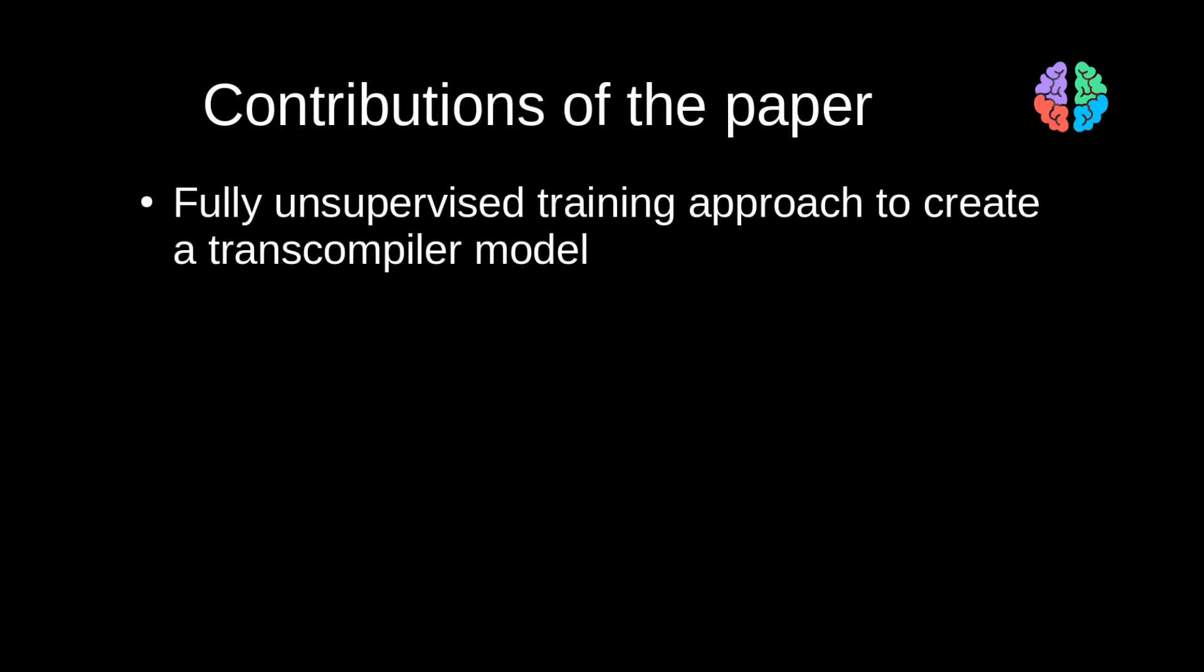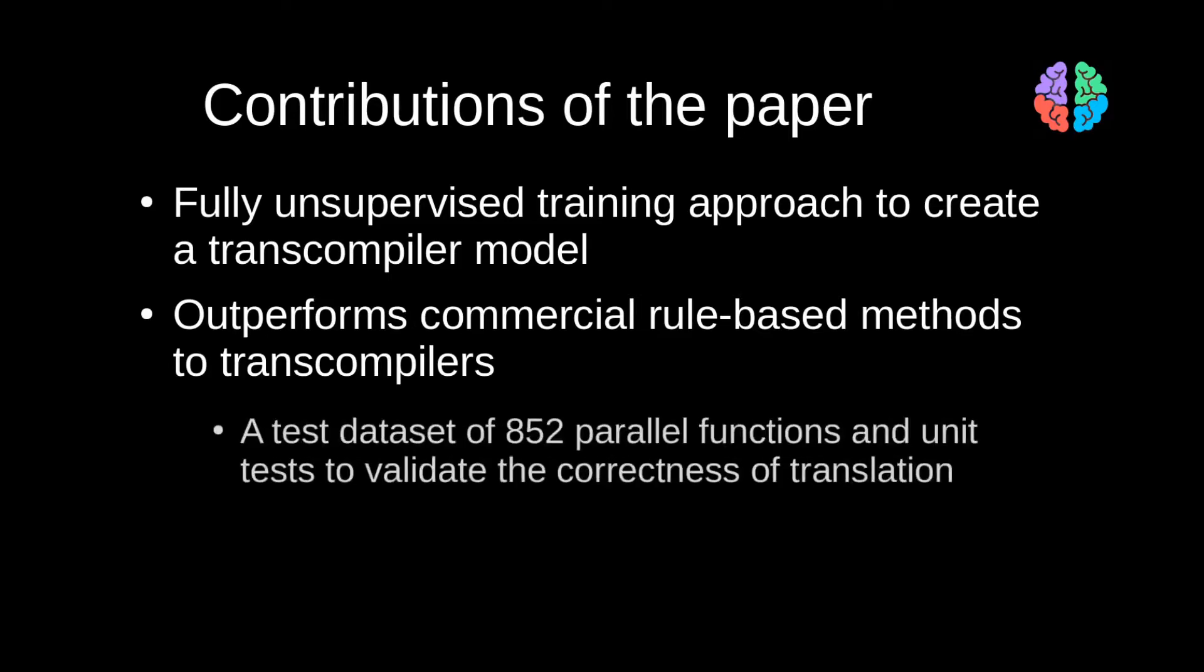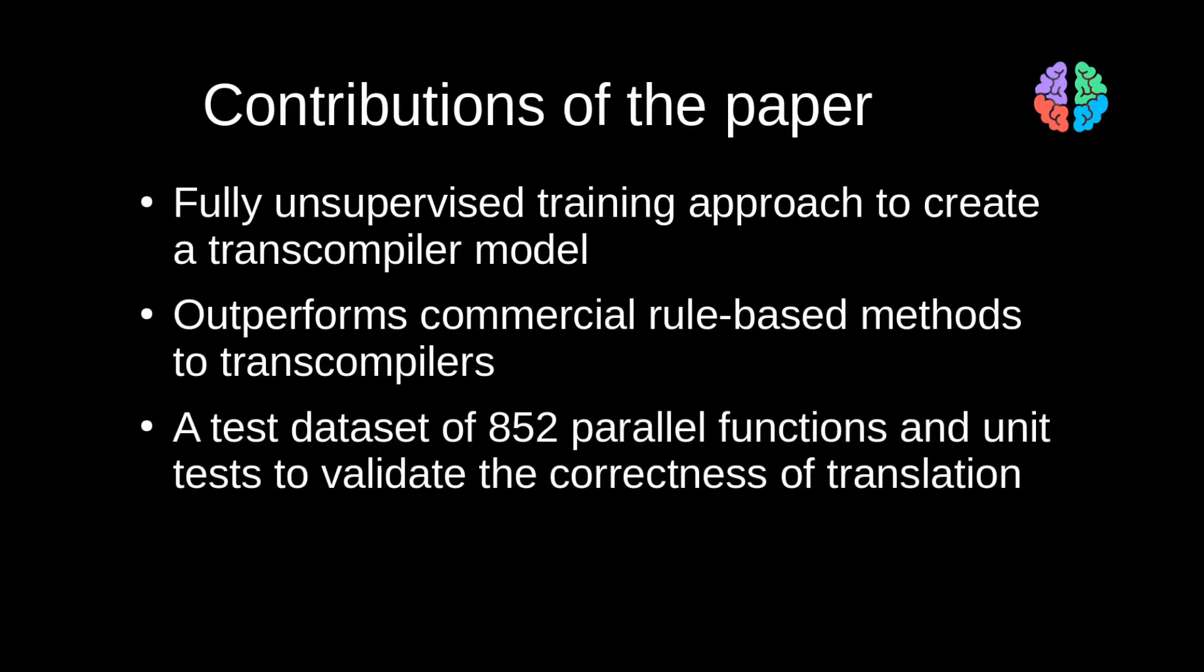The paper proposes a fully unsupervised training approach to translate between programming languages. As we will see from the results, such an AI-based system surpasses the rule-based trans-compilers, thereby promising a big future in this direction. The authors also collated a test set of 852 parallel functions in C++, Java and Python and validate the correctness of the proposed model by running several unit tests. Let's look at the unsupervised training approach.